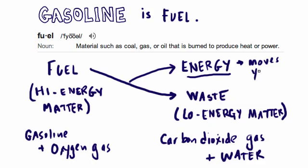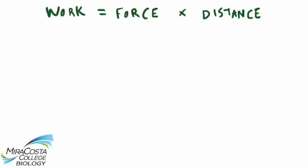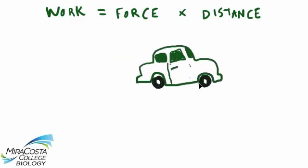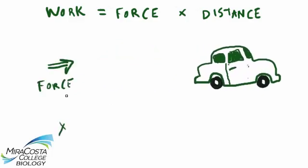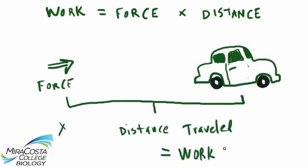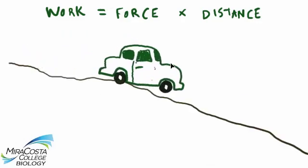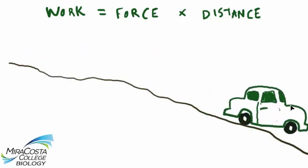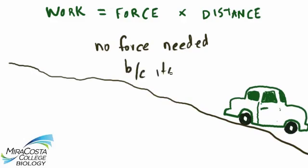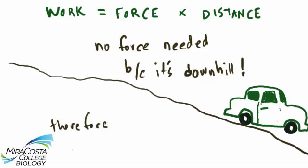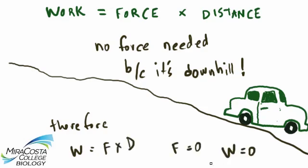You can't achieve work without the input of energy, and in a physics class you would learn that work is equal to force times distance. Think of the force that must be applied by your car's motor to move you and your car, times the distance you travel—that's the scientific definition of work. Note that if you were coasting from the top of a hill down to the bottom, this would not be considered work because you don't need to exert any force over that distance. No energy is required, and you could achieve that downhill distance traveled without any consumption of fuel or any output of energy.